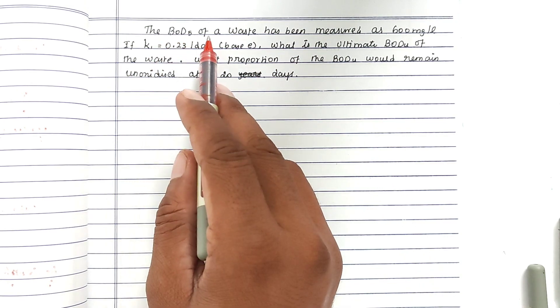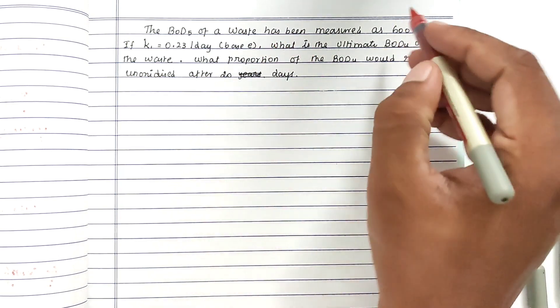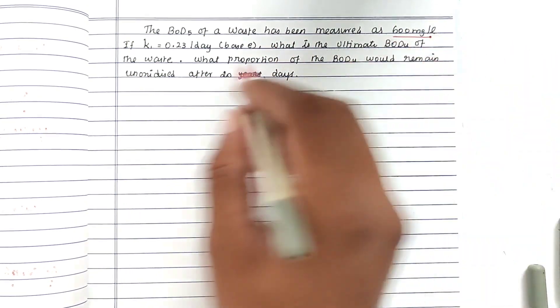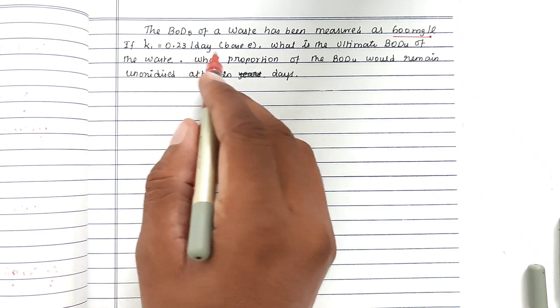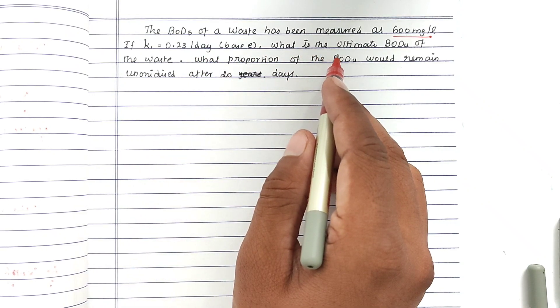The problem is: the BOD5 of a waste has been measured as 600 milligrams per liter. If K is 0.23 per day base E, what is the ultimate BOD of the waste?